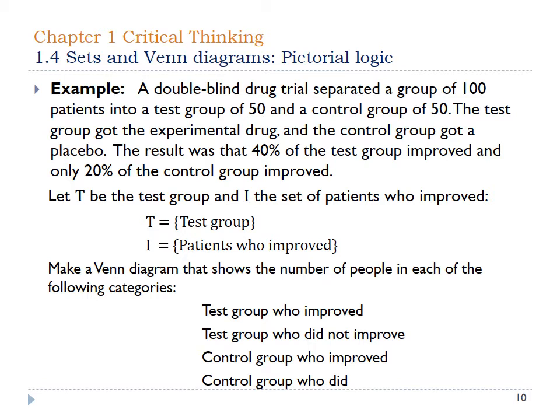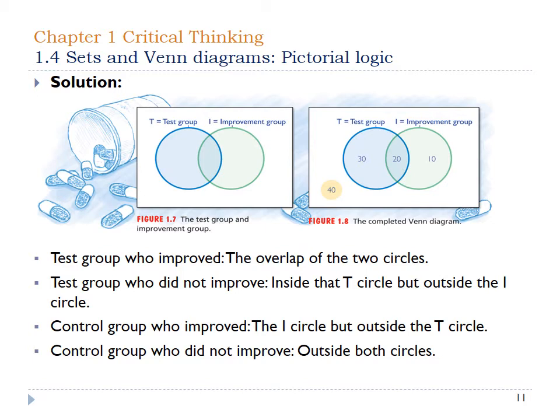We have four different cases: the test group who did improve — they took the actual drug and they improved; the test group who did not improve — they took the drug but didn't show any improvement; the control group who improved — people who didn't take the drug but got better for some other reason; and the control group who did not improve — people in the control group who didn't take the drug and nothing really changed.